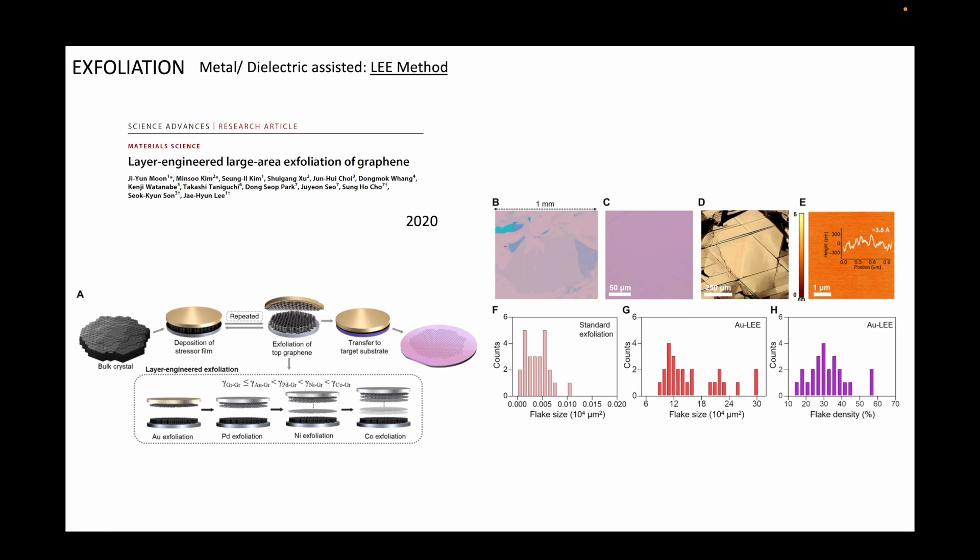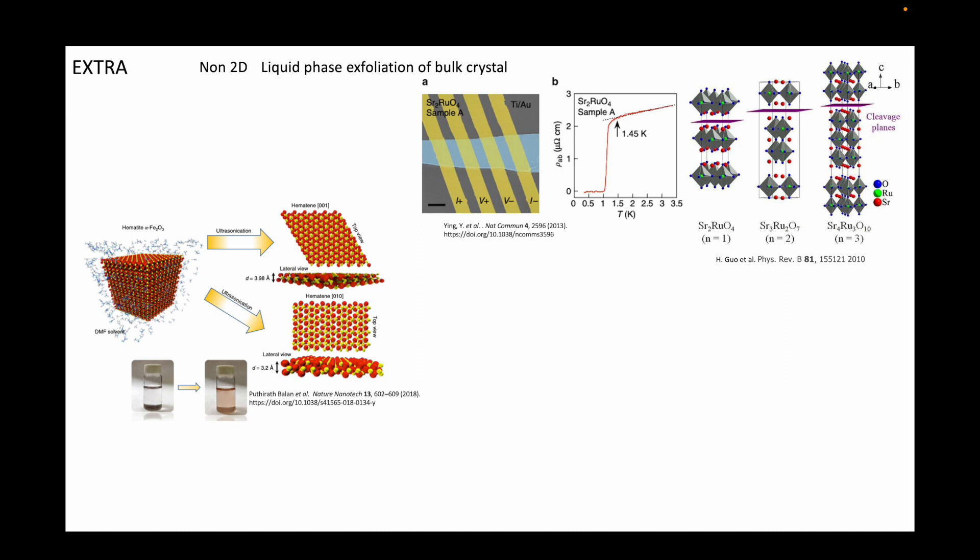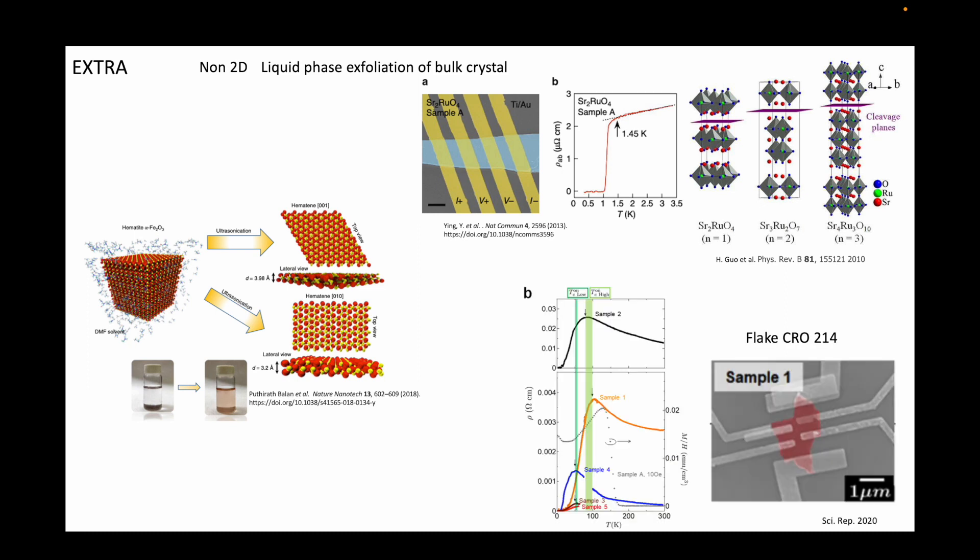The last class of exfoliation methods deal with non-van der Waals materials. These are interesting because they allow non-2D systems to be integrated into 2D heterostructures. In the beginning, I said that I will leave the liquid phase exfoliation of 2D materials for another day, but I thought I'd mention this here since this is not the large scale production of graphene-like systems. Using a liquid as a medium, bulk crystals of 3D materials can be broken down into their monolayer form.